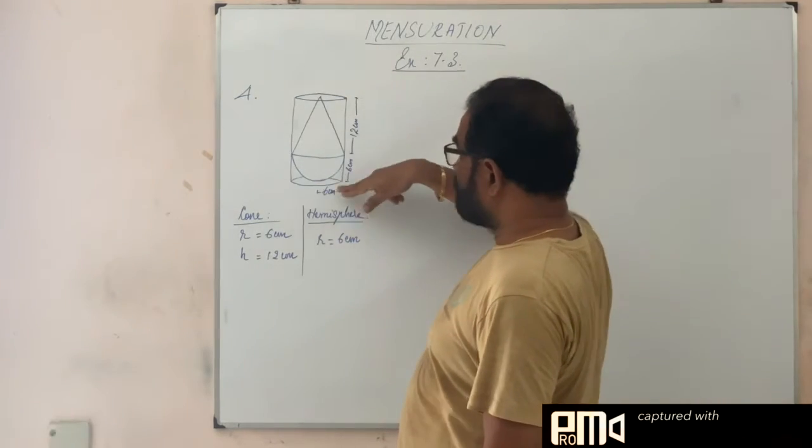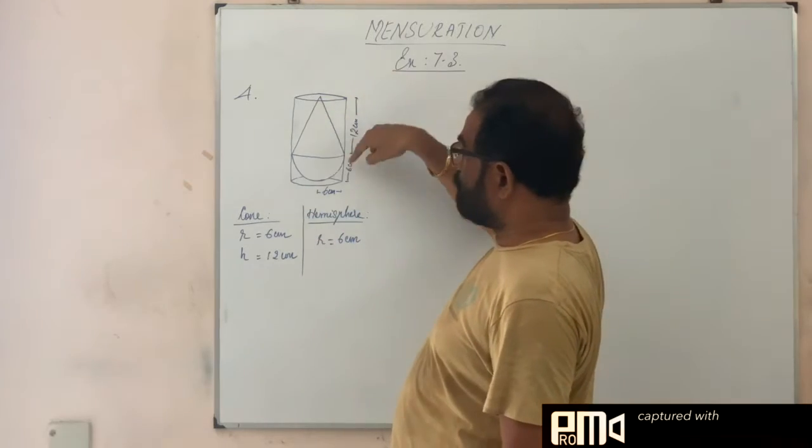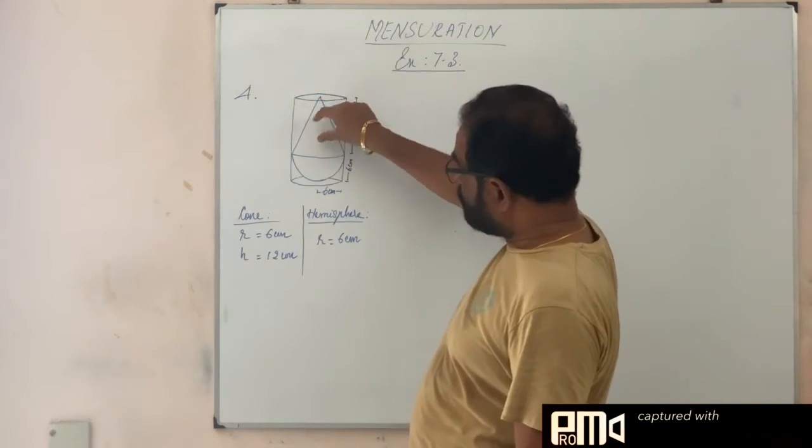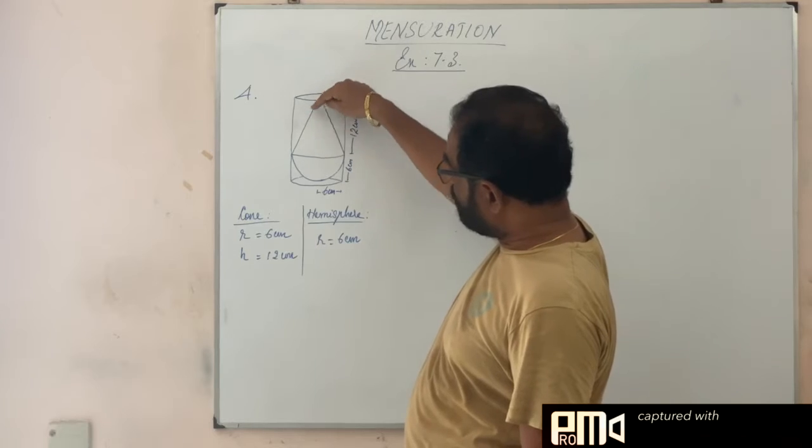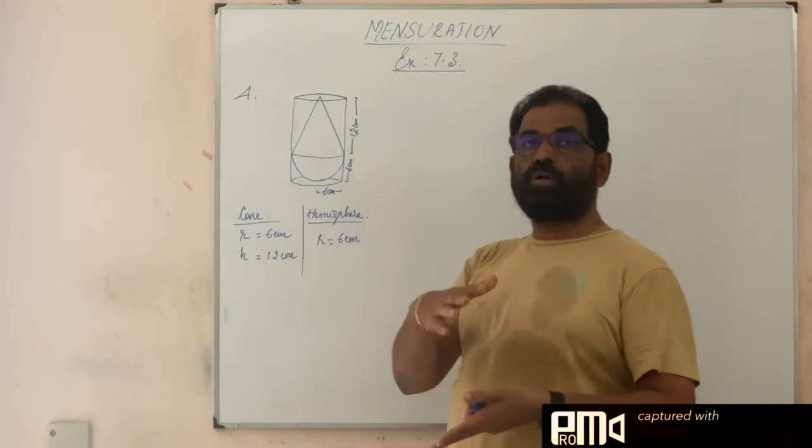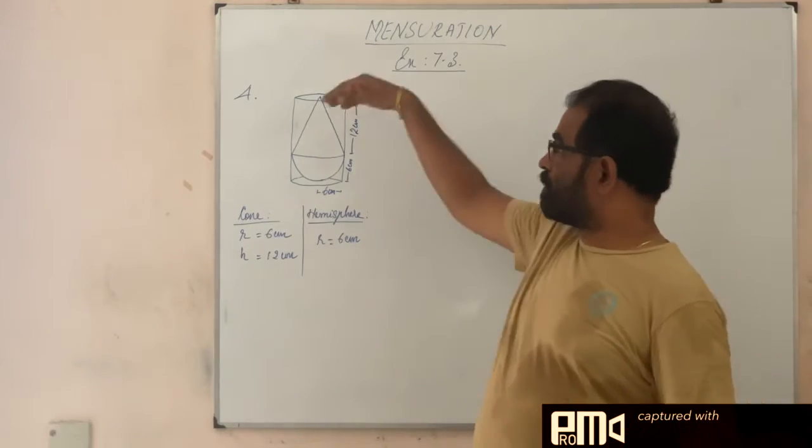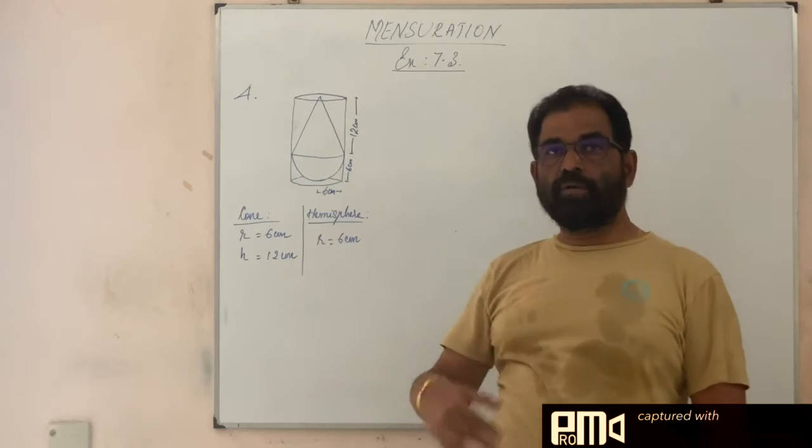See first of all, this cylinder is full of water. Okay, then you assume another solid like this, a shape in the form of a cone surmounted on a hemisphere. See this solid material is immersed in the water inside the cylinder, it is immersed. What will happen?